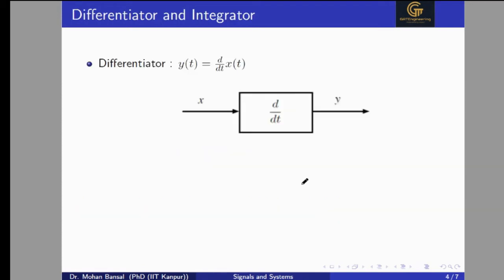Now, here are some kinds of systems. One is the differentiator. If we pass the input signal to the differentiator, we will get the differentiated signal — the differential of X(T). So the differentiator is one system where we give input X and we get Y, which is equal to d/dt of X(T).